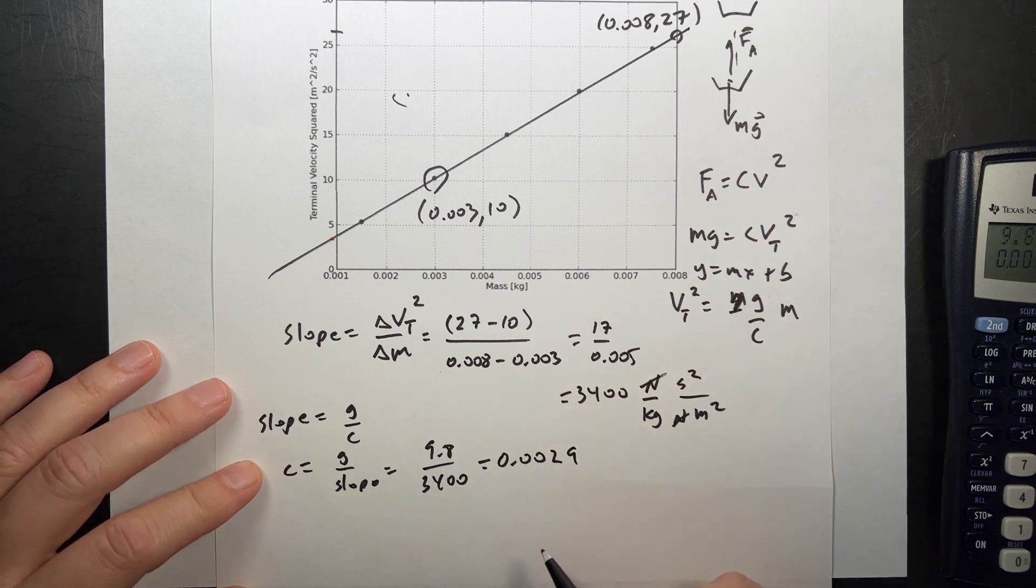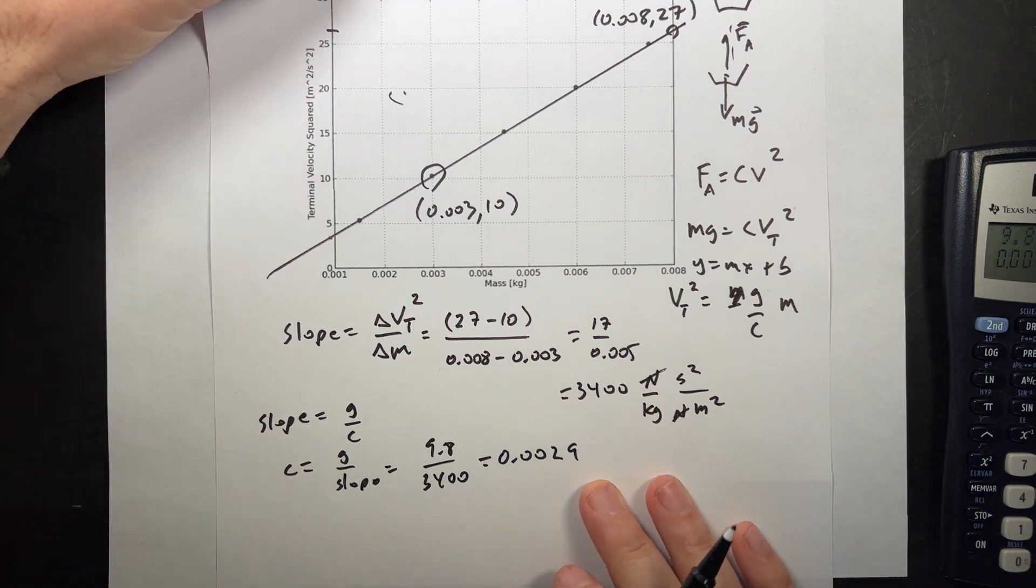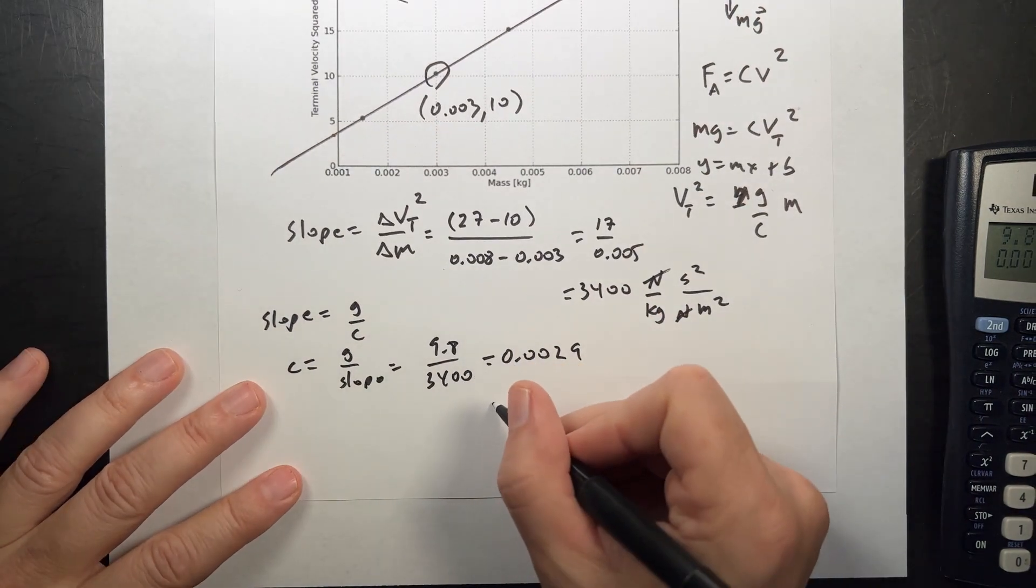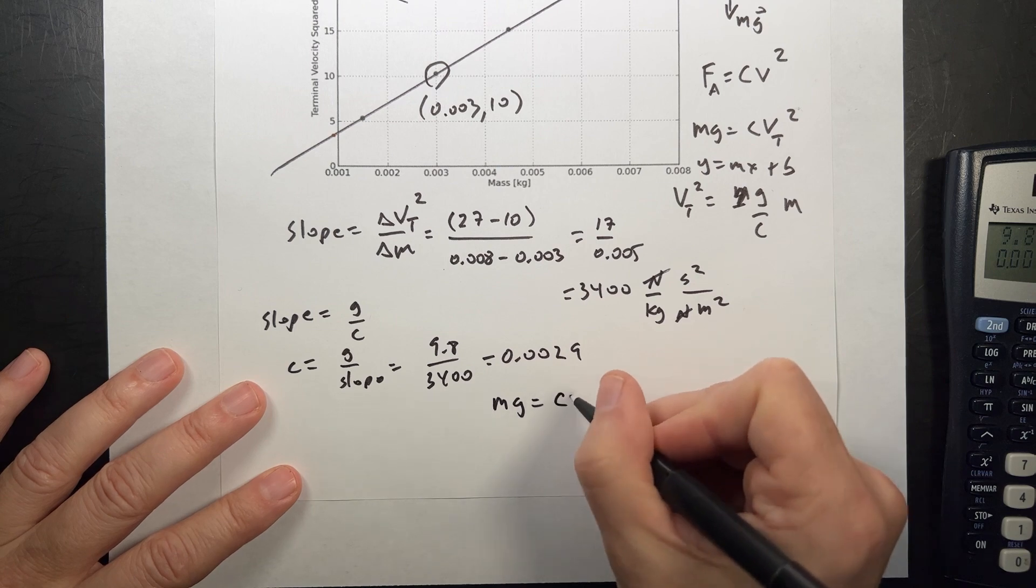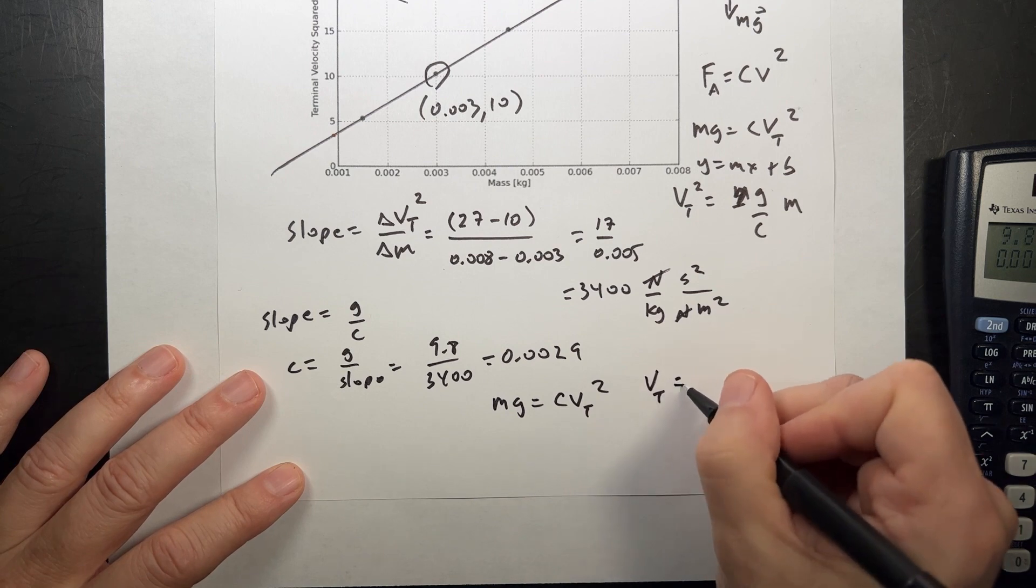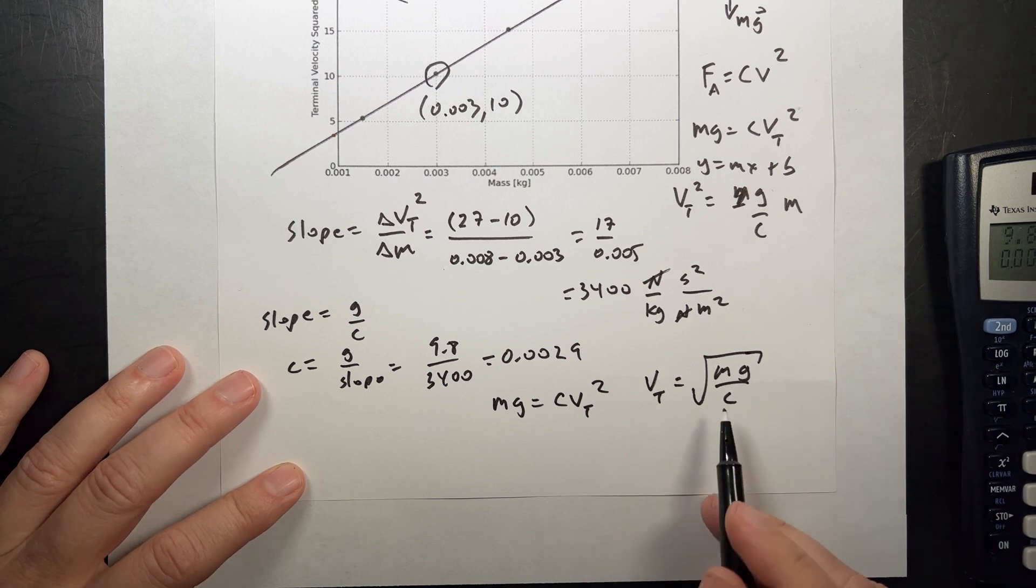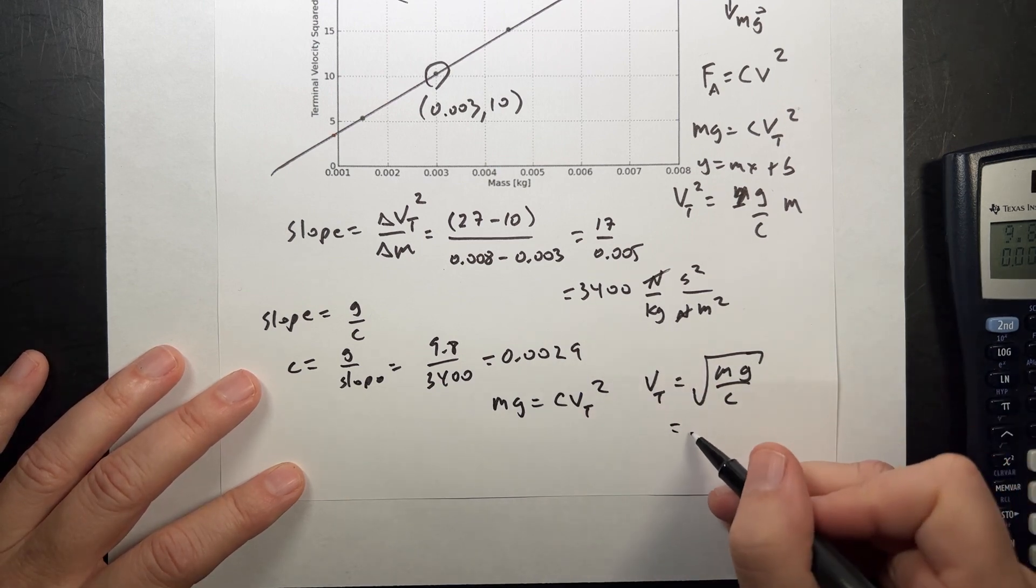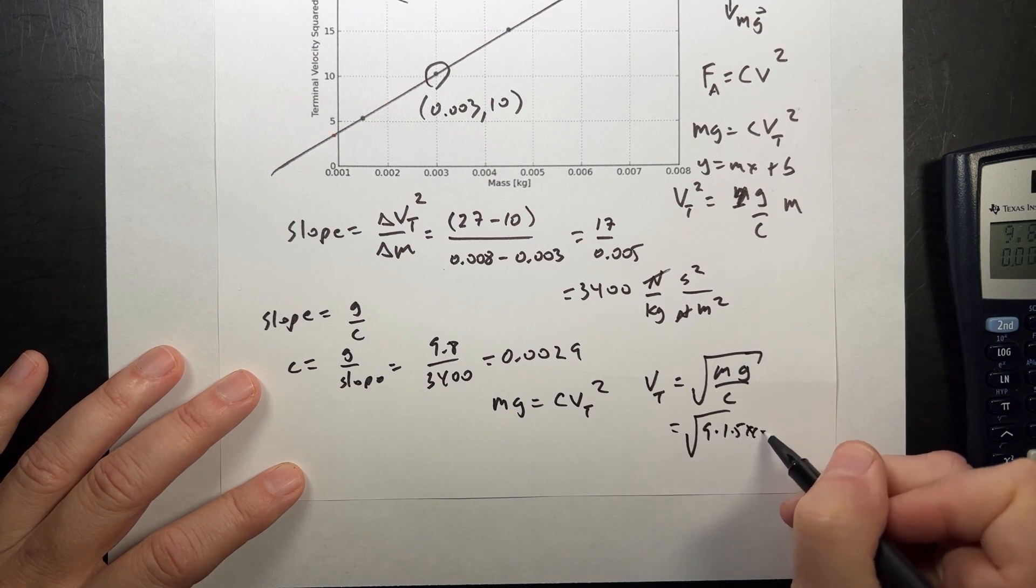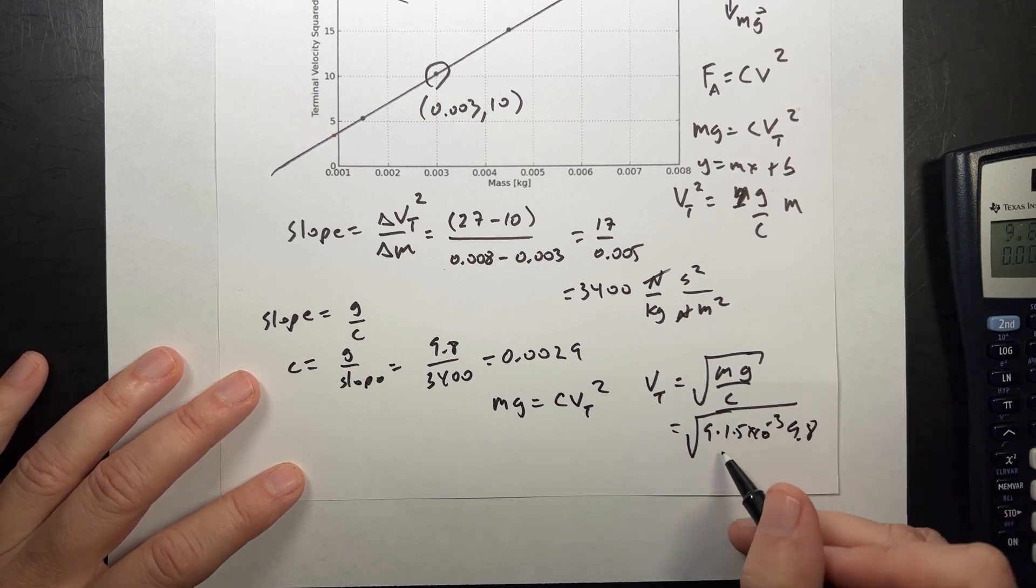Okay, now, I want to find the terminal velocity for 9 coffee filters. So each coffee filter has a mass of 1.5 grams. So at terminal velocity, mg equals c, v_t squared. So I want to solve for v_t. v_t is going to be the square root of mg over c. And so now, m is going to be the square root of 9 times 1.5 times 10 to the negative third. That's the mass. 9.8. I'm a little sloppy here. Sorry about that.